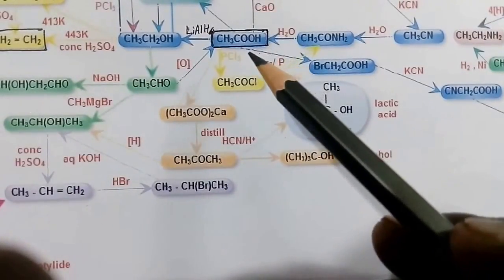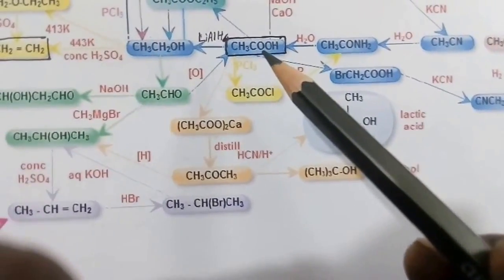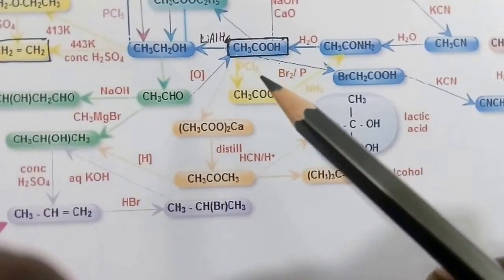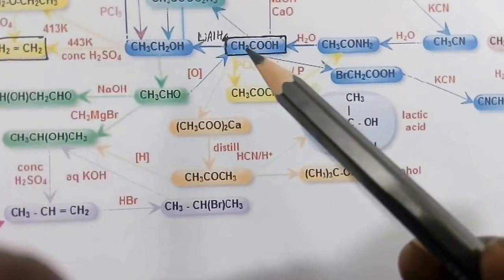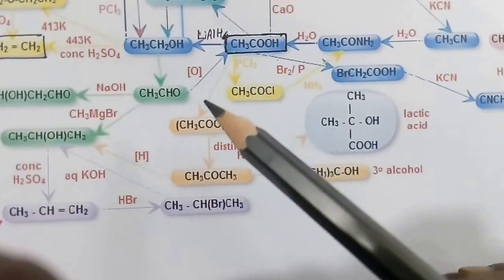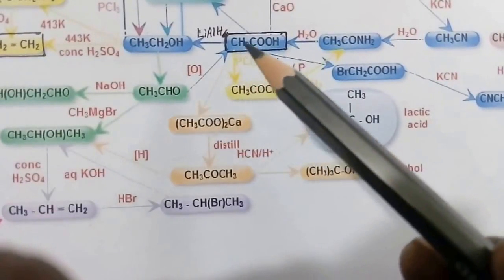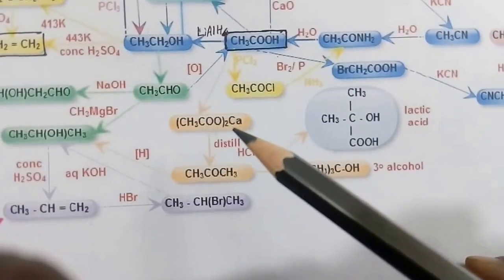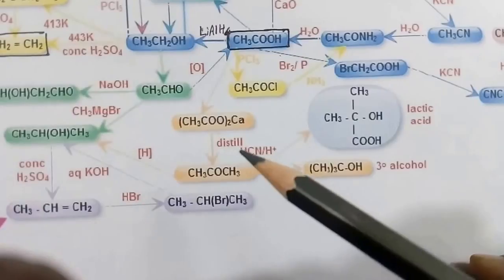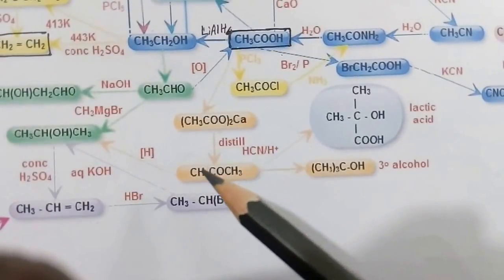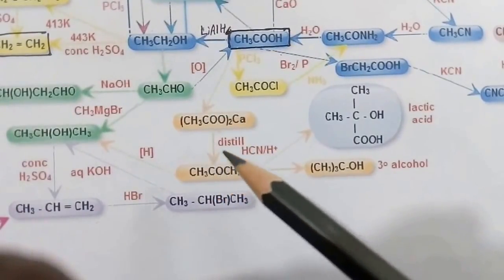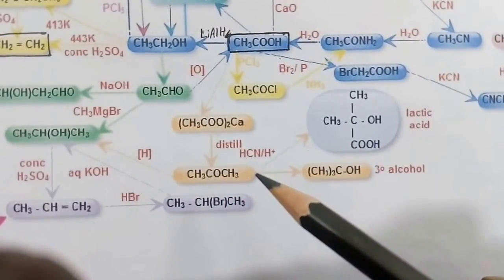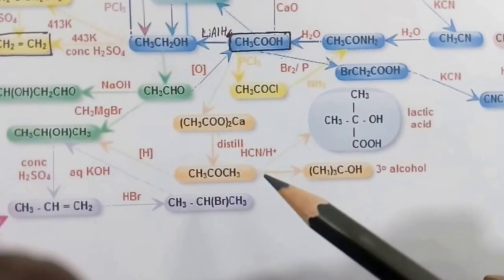From acetic acid we can also get acetyl chloride by treating with PCl₃. Acetic acid treated with calcium hydroxide gives calcium acetate. Calcium acetate undergoes dry distillation to give the very important compound acetone.